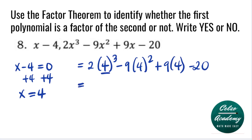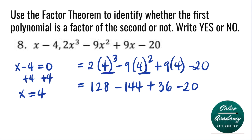Simplifying: 4 to the third is 64, times 2 gives 128. Next, 4 squared is 16, times 9 is 144. Plus 9 times 4 is 36, and minus 20. From left to right: 128 minus 144 is negative 16, negative 16 plus 36 is 20, and 20 minus 20 is 0. Since the value is 0, this means that x minus 4 is a factor of the second polynomial.